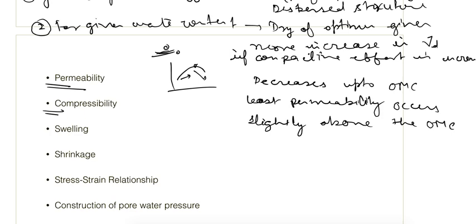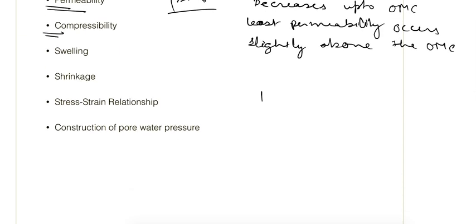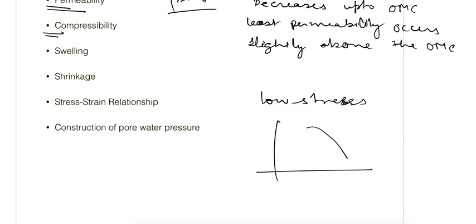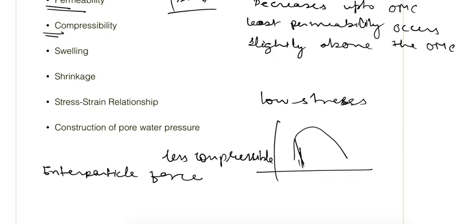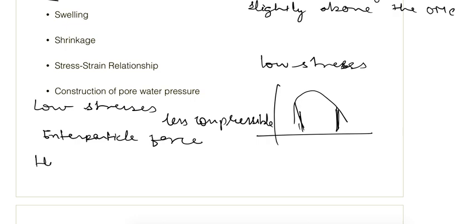The next point is compressibility. At low stresses, on the dry side of optimum the soil is less compressible because the inter-particle forces hold the soil properly. On the wet side of optimum it is more compressible at low stresses. But at higher stresses — such that the flocculated structure on the dry side of optimum is broken —